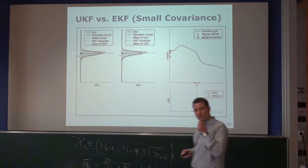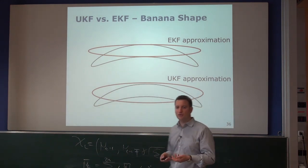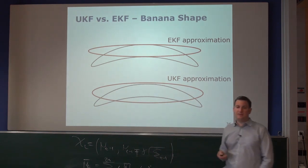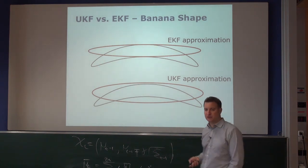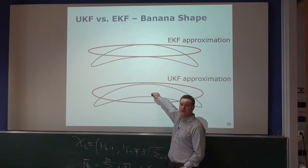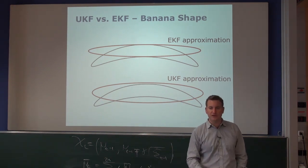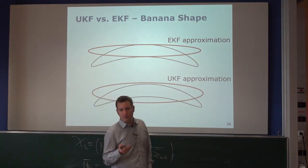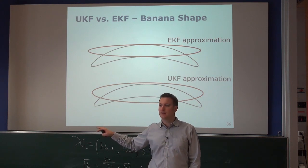For a mobile robot example: the true distribution from propagating through the velocity-based motion model has a banana shape. The EKF approximation fails to cover significant areas of probability mass. The UKF approximation gives a larger uncertainty in the appropriate dimension, covering the banana shape better. The more noise there is in the robot's heading, the greater the difference between EKF and UKF.